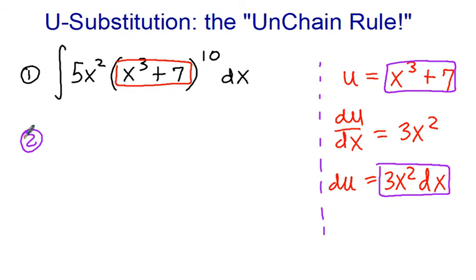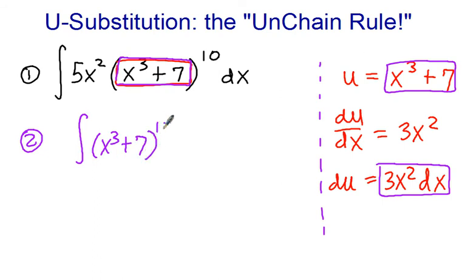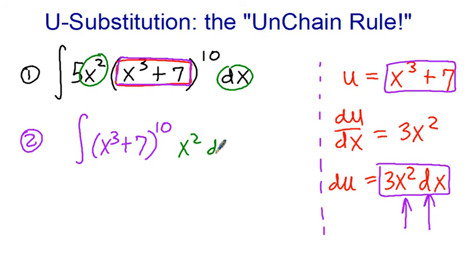Step two, we're just going to organize the terms here. I'm going to keep this as it is: x cubed plus 7 to the 10th power. And I want to look for x squared dx, which I have right here. I've got the x squared, I'll move it to the right-hand side. I've got the dx, so I'll cluster those together. What I was really hoping to see, based on what du is, is 3x squared dx, but unfortunately we don't have 3, we've got 5. So let's see if we can find a way to manage this problem.